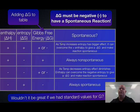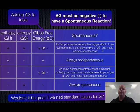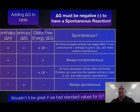For the plus/plus and minus/minus scenarios, ΔG could be either positive or negative depending on temperature. In the plus/plus case, as you increase temperature, entropy has a bigger effect — subtracting a larger positive value makes ΔG more likely to be negative and the reaction more spontaneous. In the minus/minus case, decreasing temperature diminishes entropy's effect and can make ΔG negative.